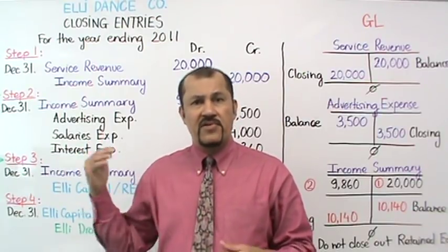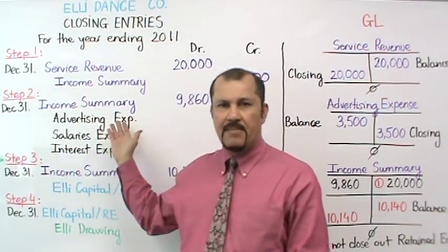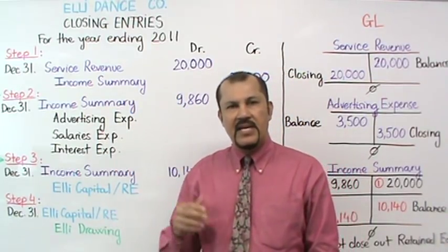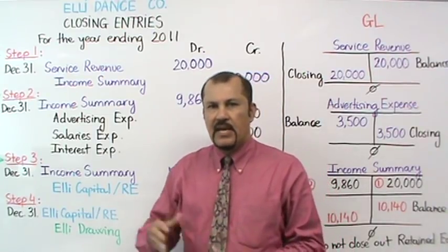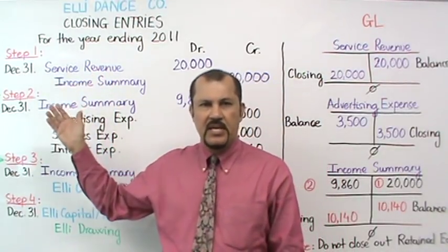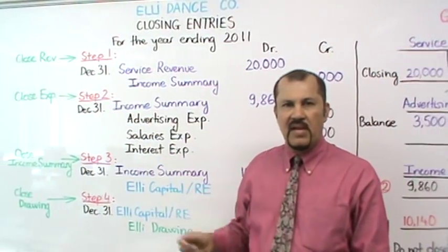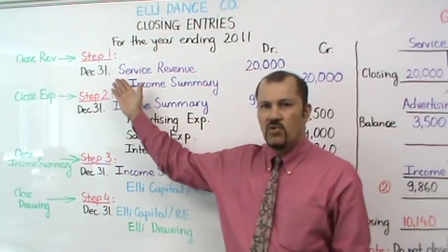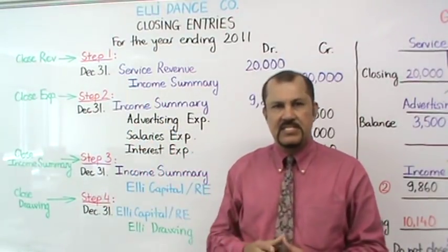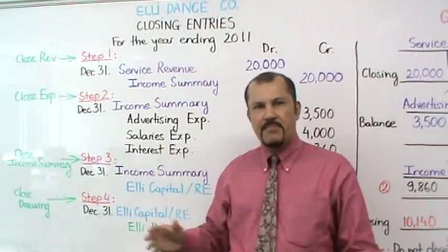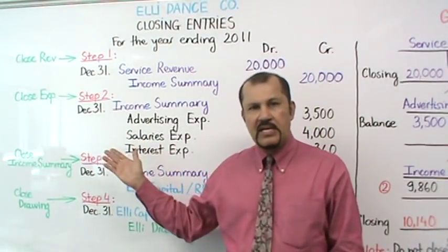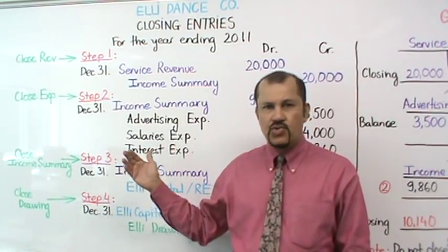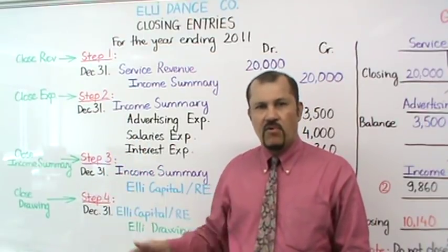We start off with a series of closing entries that I've outlined below. So here in this example, we have the closing journal entries for Ellie Dan's company for the year ending December 31, 2011. To close out, there are several steps that we need to follow. I've outlined four steps. Step one is where you close out your revenues. Step two, you close out expenses. Step three, you close out income summary. And step four, you close out your drawing if you have a proprietorship. If you have a corporation, you do not have a drawing account, and so there will be no need for step four in that case.